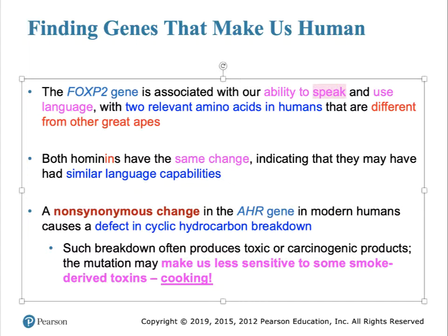Another gene with similarly profound outcomes is the AHR gene, in which the human mutation causes a defect in breaking down hydrocarbons of a cyclical nature. When you cook food, the cooking process releases carcinogenic substances not present in raw meat — specifically toxic substances present in the smoke around the cooking process. Thus chimpanzees would be poisoned to a greater degree by the cooking process than would we modern humans.